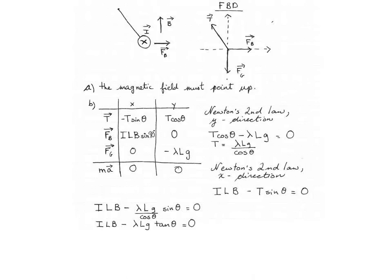And we get ILB minus lambda Lg tan theta. Finally, we solve for the magnetic field. We get lambda G tan theta over I.